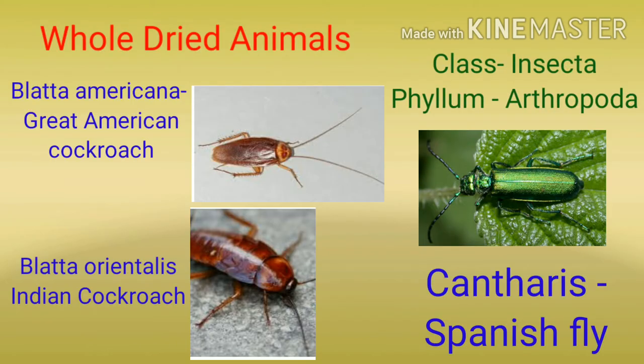Next, let's talk about whole dried animal group। यहाँ पर medicine पूरे animal को dried form में लेके prepared की जा रही है। यहाँ पर भी class Insecta है और phylum Arthropoda। First one is Blatta americana जिसका common name है great American cockroach। Second is Blatta orientalis जिसका common name है Indian cockroach। The third one is Cantharis जिसका common name है Spanish fly।